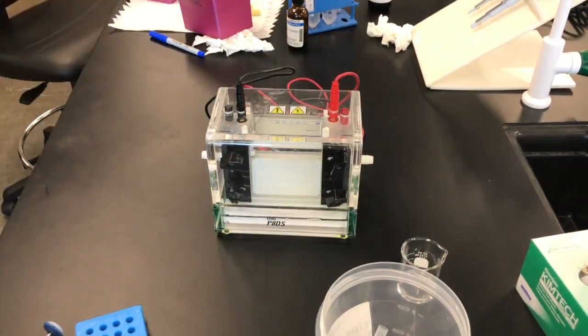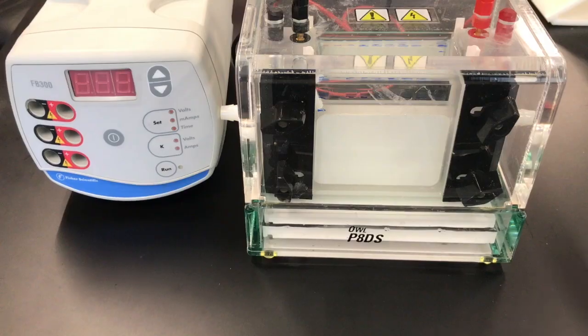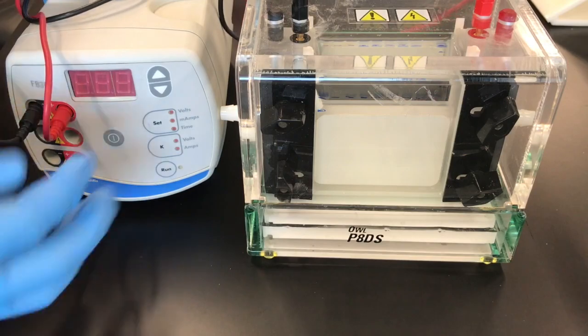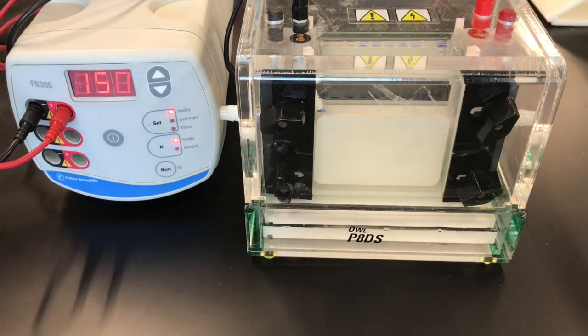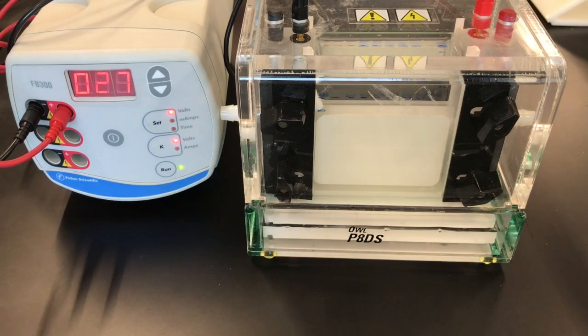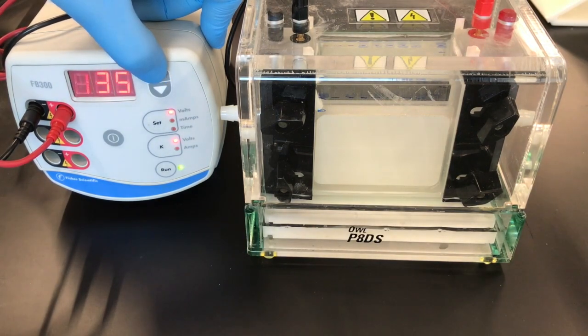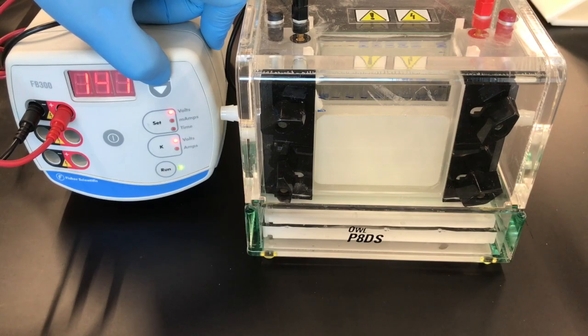You can then also connect the other ends of the wire to the power supply. Again, red to red, black to black. Turn on the power supply. There's a switch in the back and the power button on the front. You can go ahead and set it to 150 volts and then click on run.